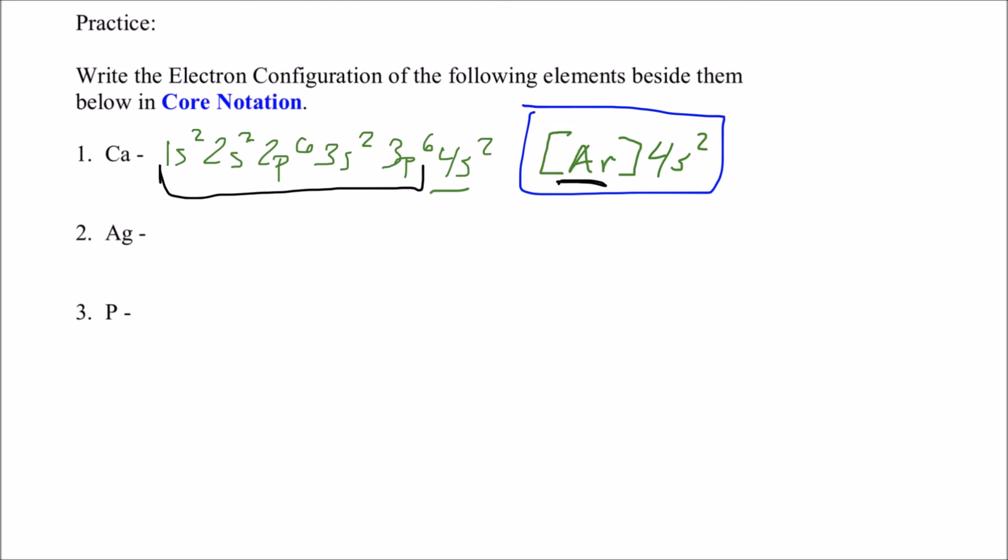We let argon take the place of all of this stuff right here. Because this is the configuration for argon. If you were to write down the electron configuration for argon, it would be 1s2, 2s2, 2p6, 3s2, 3p6. So we just let it take the place of all that, and then we finish up with our 4s2 for calcium.